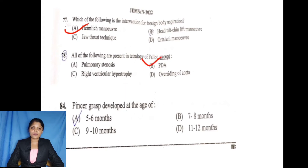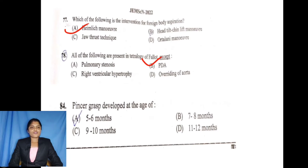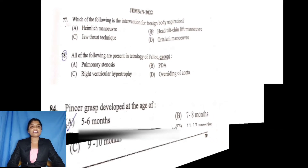Next: Pincer grasp develops at what age? Option A is 5 to 6 months. Option B is 7 to 8 months. Option C is 9 to 10 months. Option D is 11 to 12 months. Option C is correct: 9 to 10 months. These are immature pincer grasps.